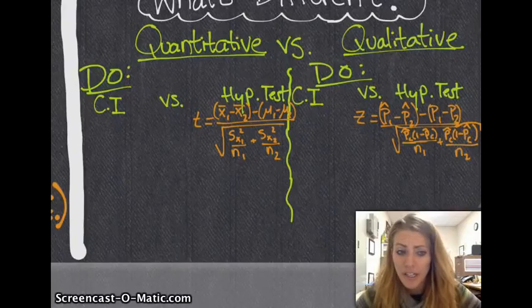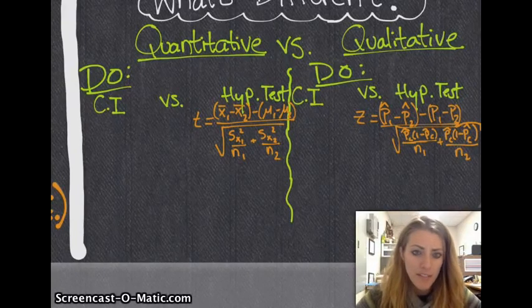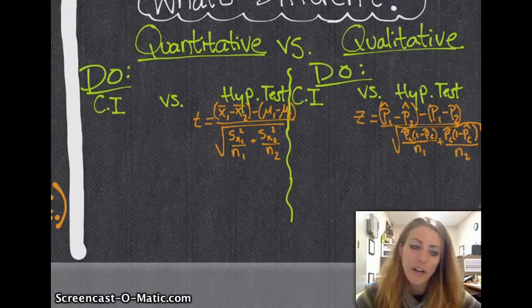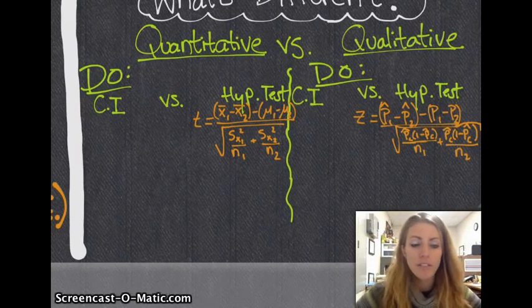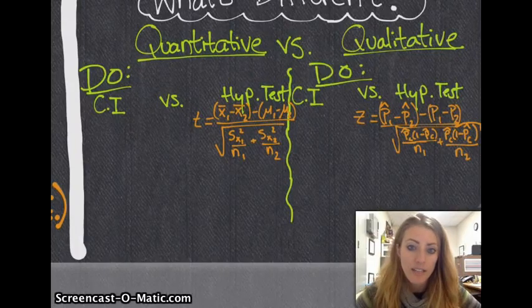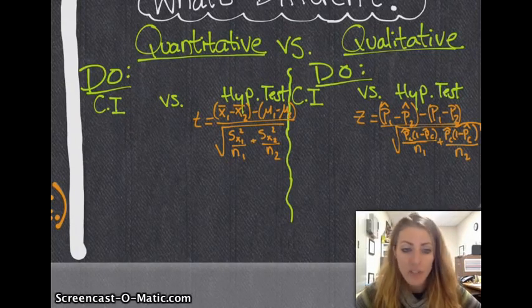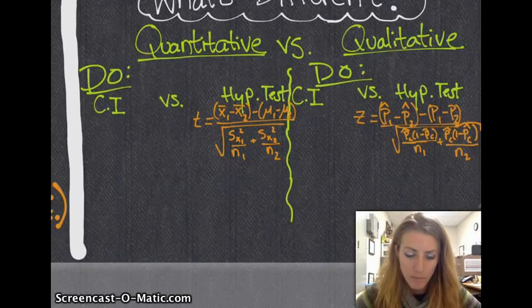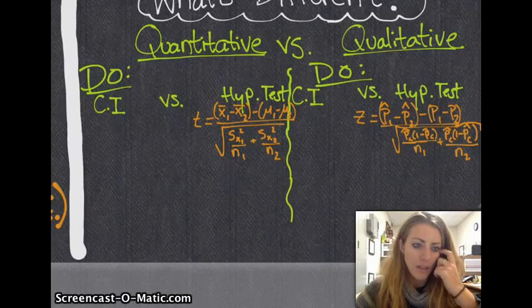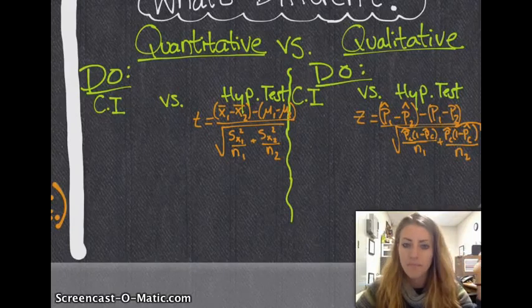Lastly is just concluding in context. If it's a confidence interval, we are 90% confident that the true difference between p1 and p2 is between this and this value. If it's a hypothesis test, we reject the null hypothesis, we fail to reject the null hypothesis or whatever your conclusion is at your alpha level. So again, same stuff we've been doing.